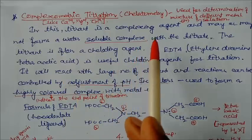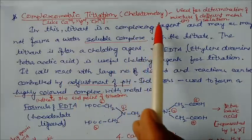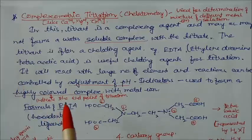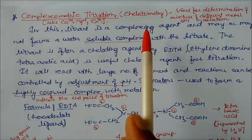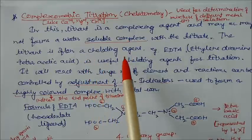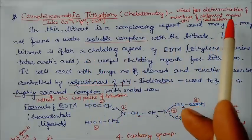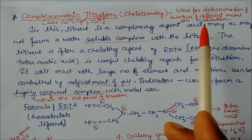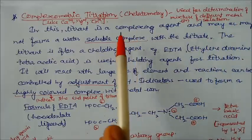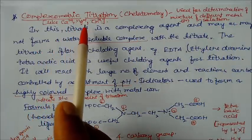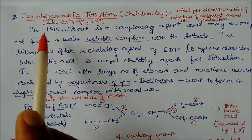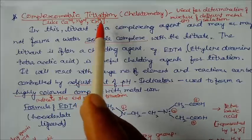This is also called chelometric titration. 'Chelometric' means we are measuring using complexes. This titration is used for the determination of mixtures of different metal ions present in solution, such as calcium, magnesium, and zinc.